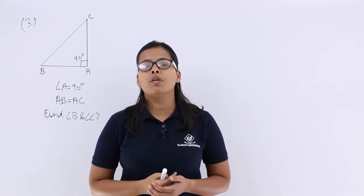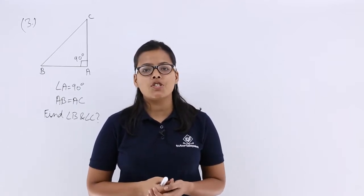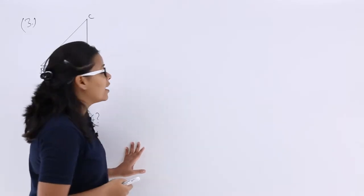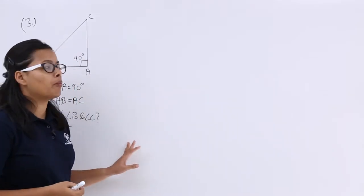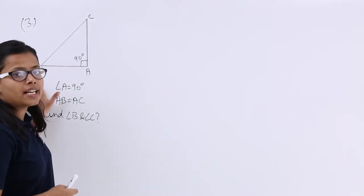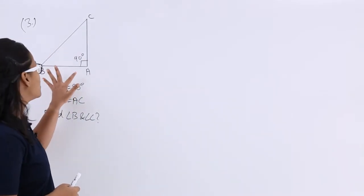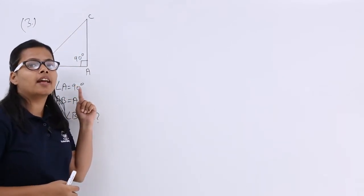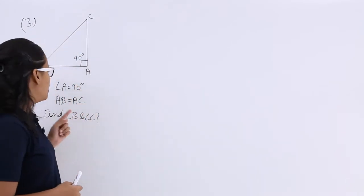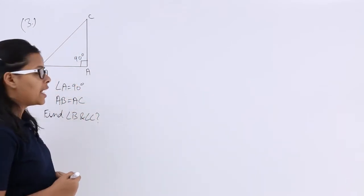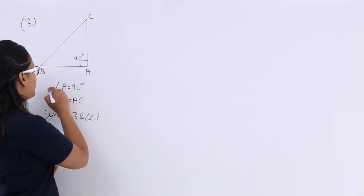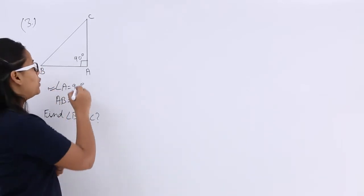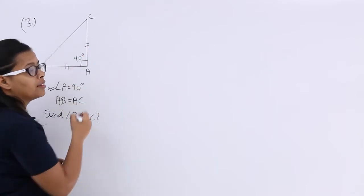Hello guys, let's take another problem based on properties of a triangle. In this problem, I have drawn a right angle triangle A, B, C where the right angle is at A. You know that angle A is 90 degrees, and it has been given that AB is equal to AC.